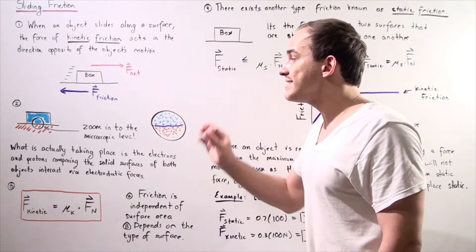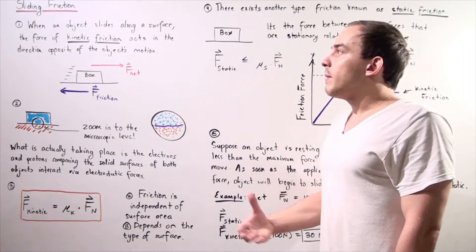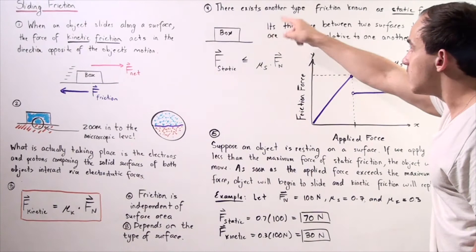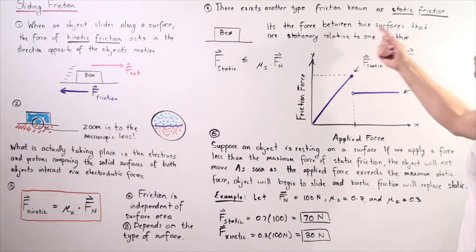Now let's talk about a second type of friction known as static friction. Static friction is the force created between two surfaces that are stationary relative to one another.